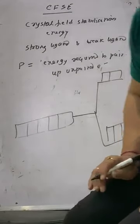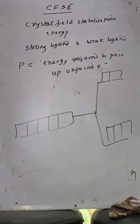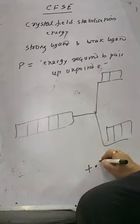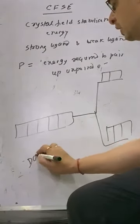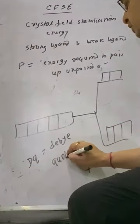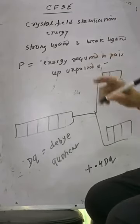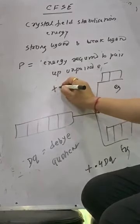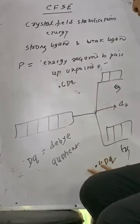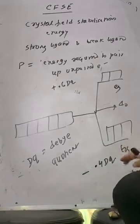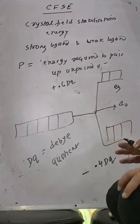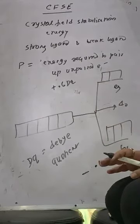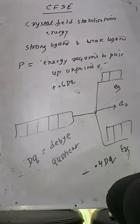When the electron goes into the T2G level, it contributes an energy of minus 0.4 DQ, where DQ means divide quotient. If the electron goes and submits itself into the EG level, that contributes plus 0.6 DQ. So T2G contribution is minus 0.4 DQ and EG contribution is plus 0.6 DQ.